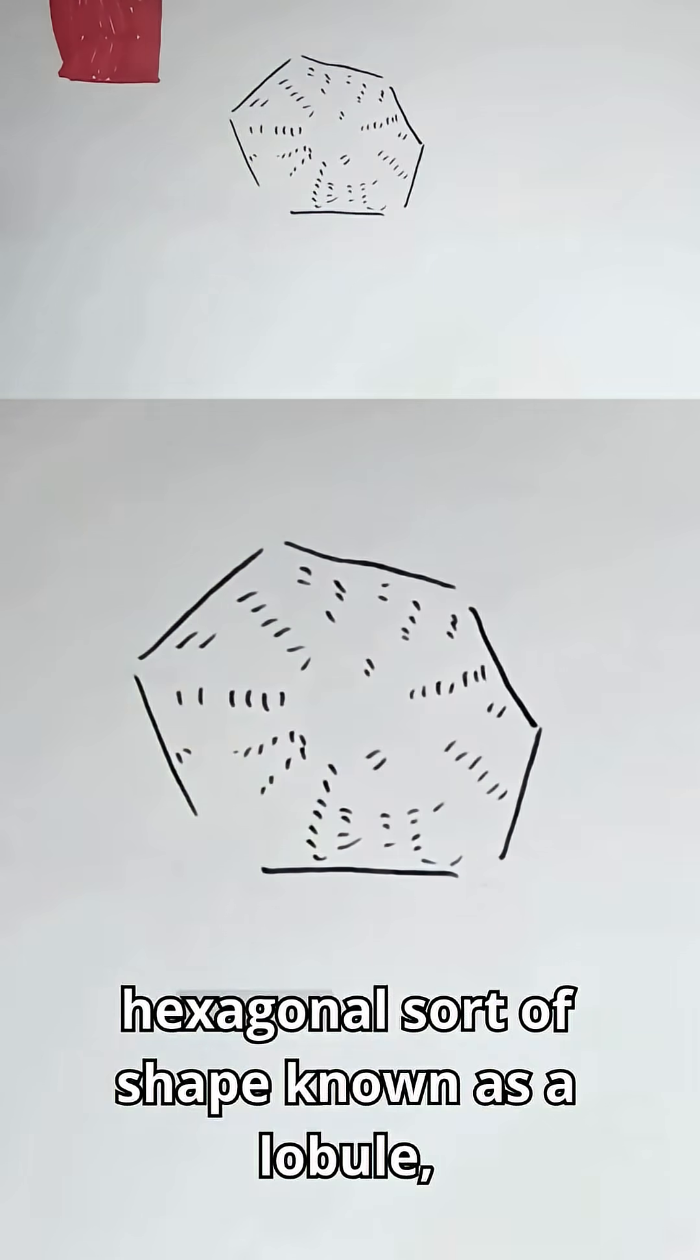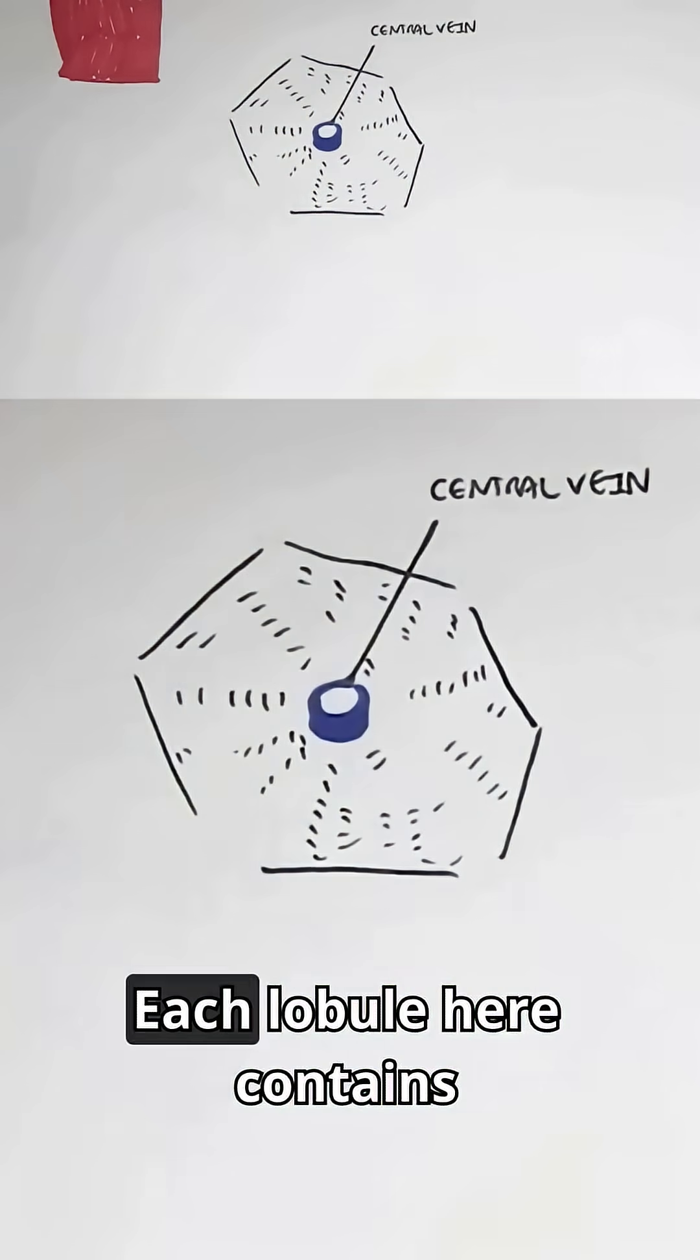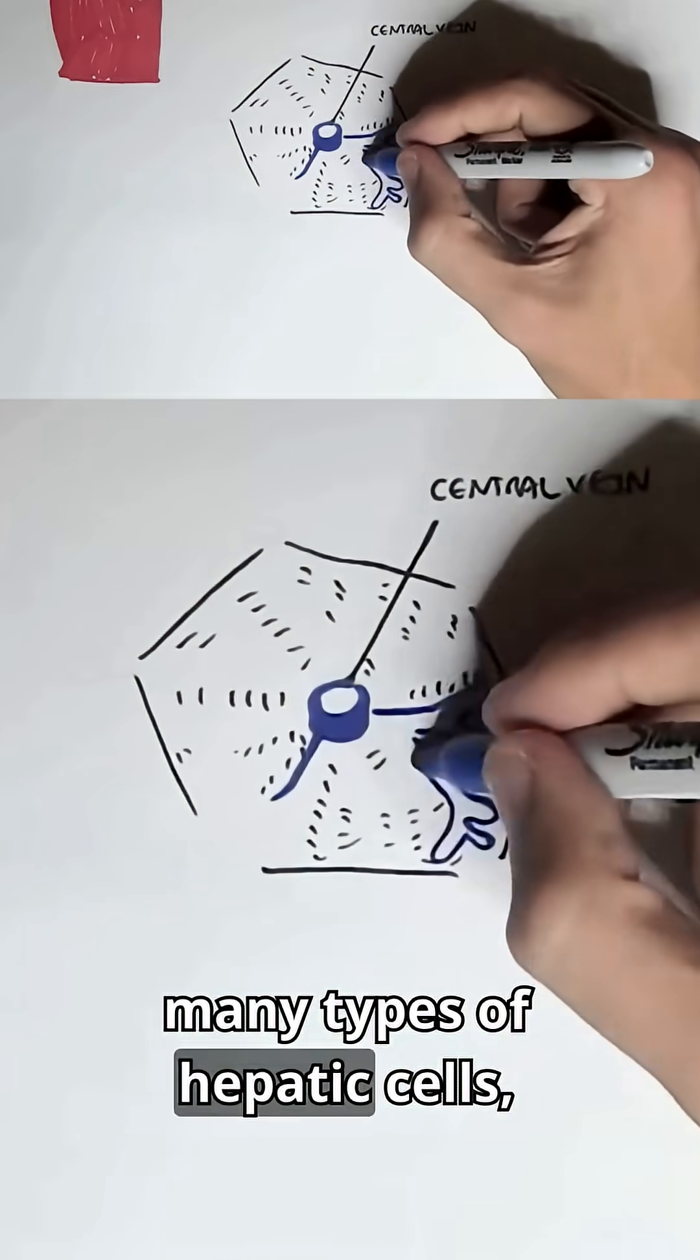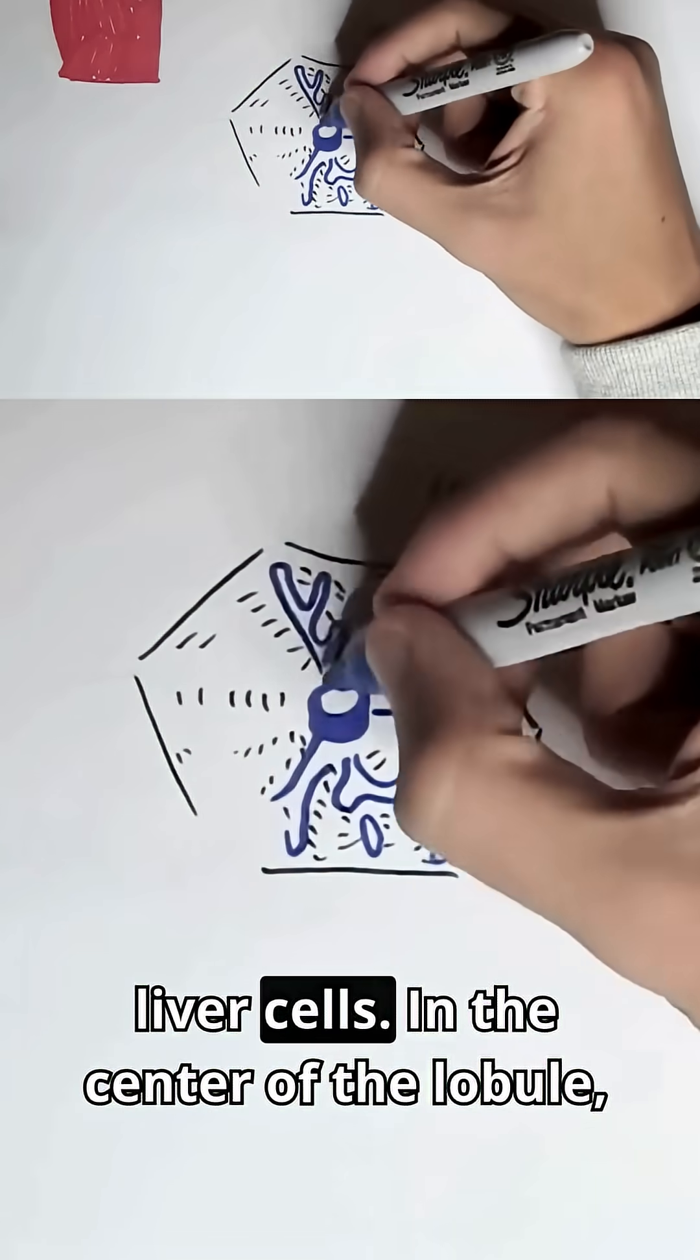The liver is organized in a hexagonal sort of shape known as a lobule, like so. Each lobule here contains many types of hepatic cells, liver cells.